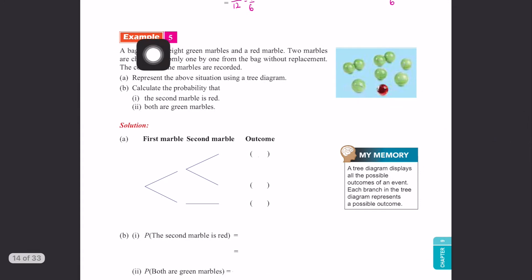Okay, next. Let's look at example 5. A bag contains 8 green marbles and one red marble. So we have 8 green, 1 red. Two marbles are chosen randomly, one by one from the bag without replacement. Without replacement means the sample space will decrease. The colors of the marbles are recorded.